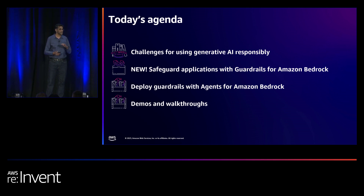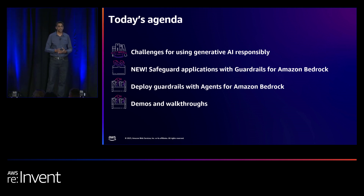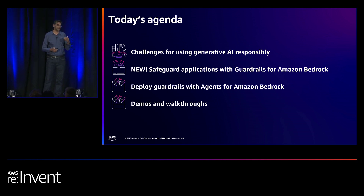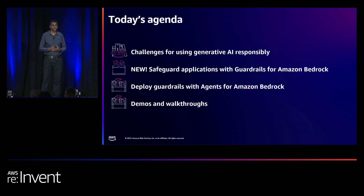With agents, that's the integration layer where you can integrate these models into your applications. Agents help you automate multi-step tasks. As you look at these three layers — the choice of models, the customization, and the integration — all of this really requires strong security and privacy to make these enterprise-ready for your mission-critical workloads. That's where guardrails comes into picture. Guardrails provides you the ability to steer interactions between the foundation model and the user, customized to your company policies and content filtering techniques.